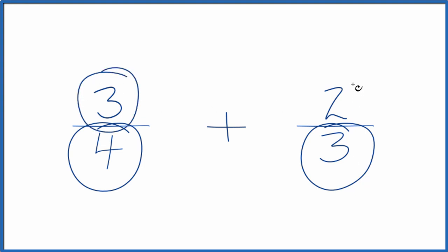Then we can just add the numerators together and we'll have the answer for the sum of 3 fourths plus 2 thirds.